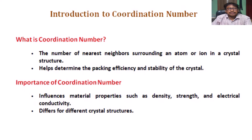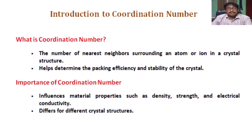Introduction to Coordination Number: What is Coordination Number? The number of nearest neighbors surrounding an atom or ion in a crystal structure — it helps determine the packing efficiency and stability of the crystal. Importance of Coordination Number: it influences material properties such as density, strength, and electrical conductivity, and differs for different crystal structures.